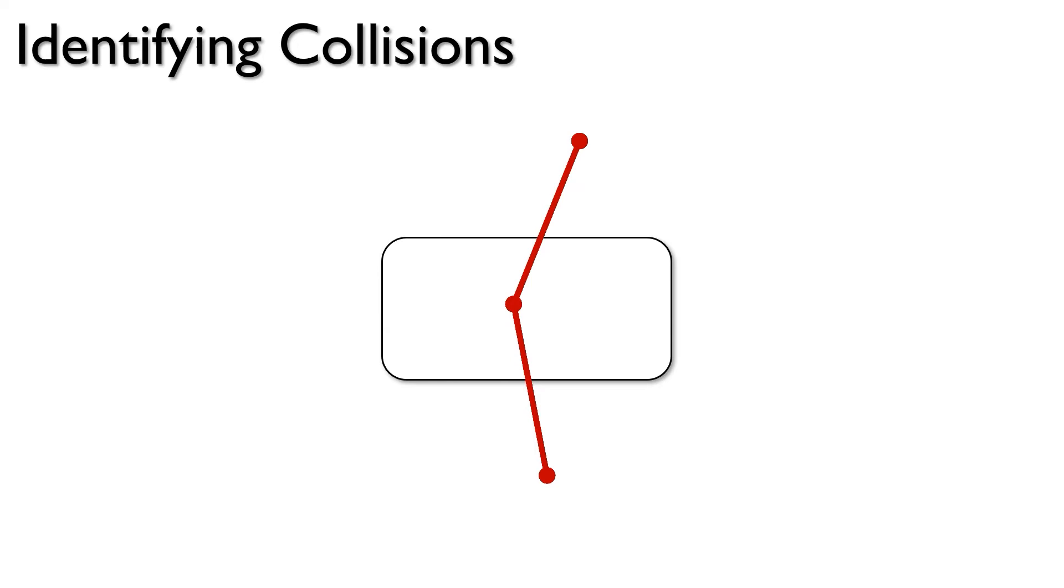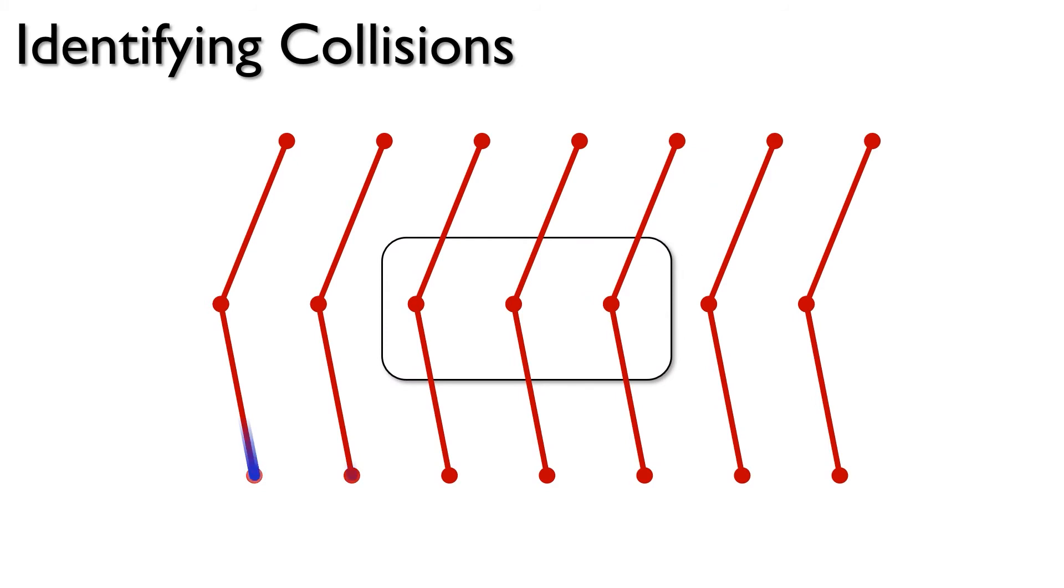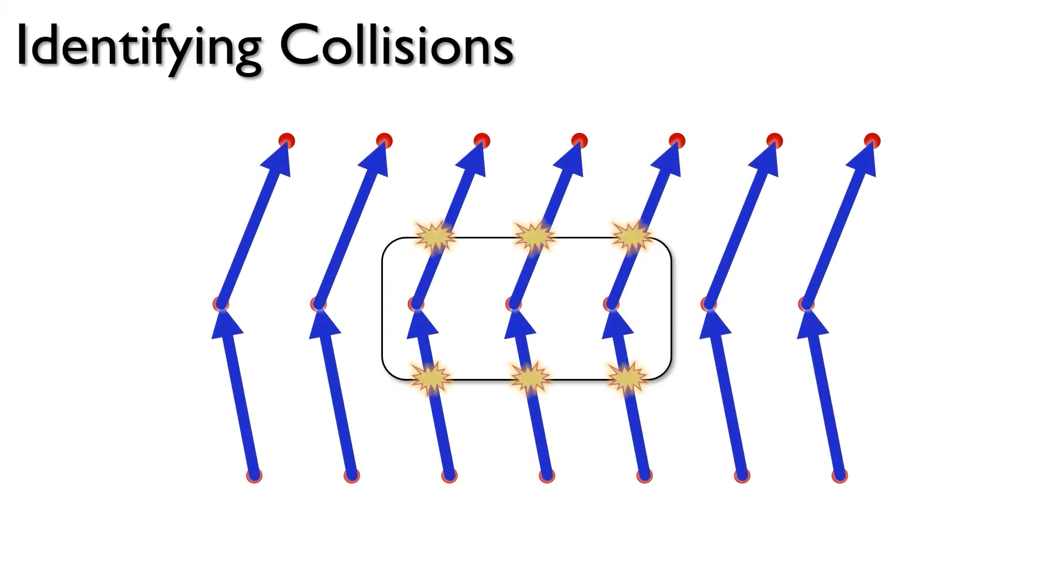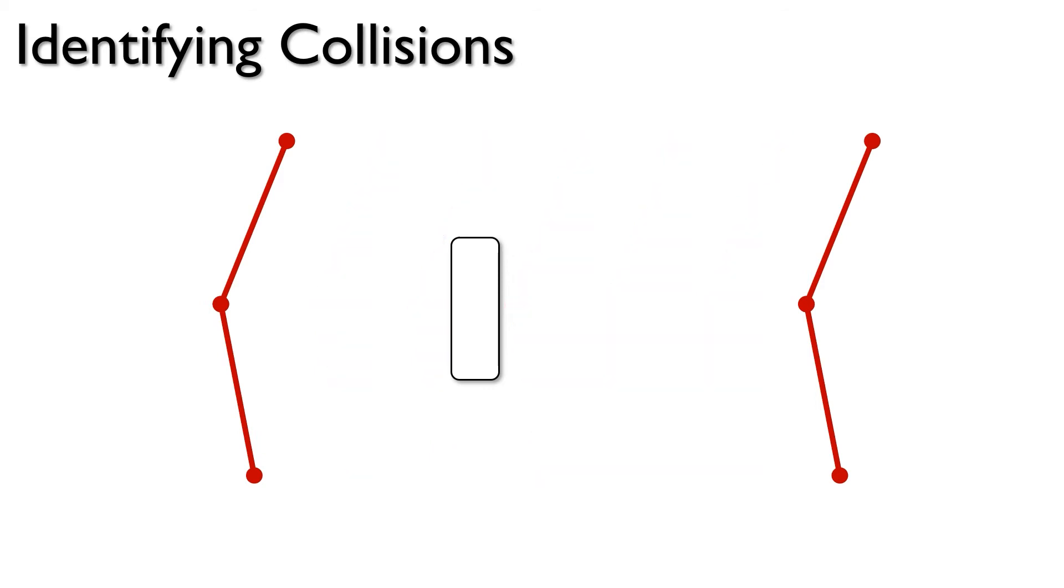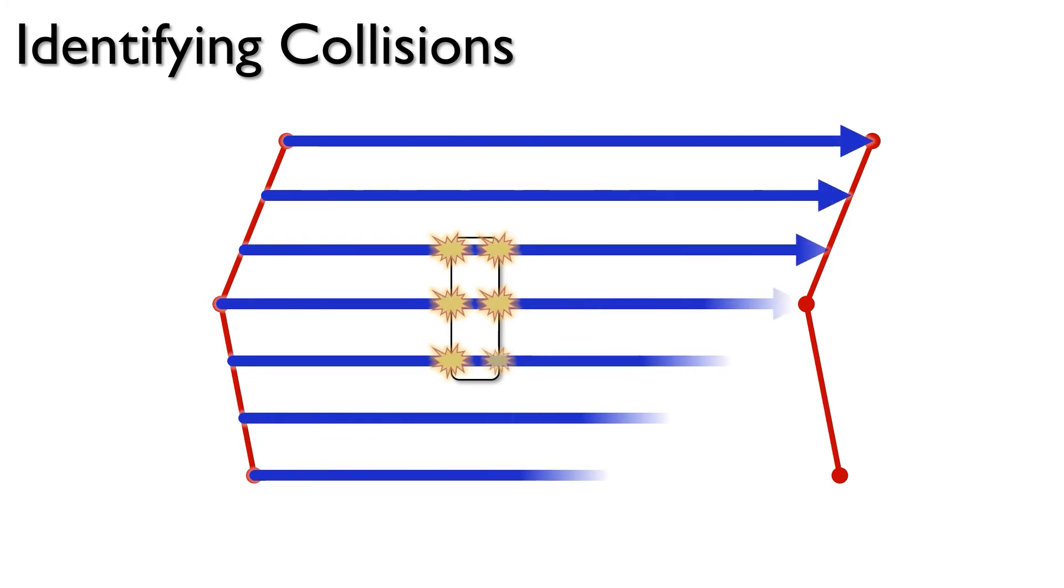To identify collisions between the skeleton and the object, we leverage a ray tracing algorithm. We shoot multiple rays along the skeleton and see if they intersect. We then discretize the time along the trajectory and use ray tracing to check for collisions at each time step. However, when discretizing at low resolution, collisions through a narrow object will not be captured, and increasing the resolution can be costly. We therefore propose to also discretize the skeleton and shoot rays in the direction of the trajectory.